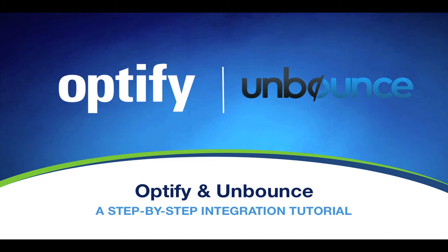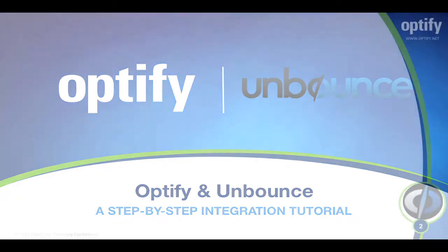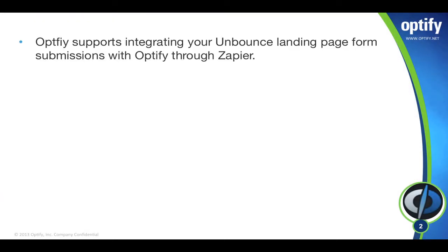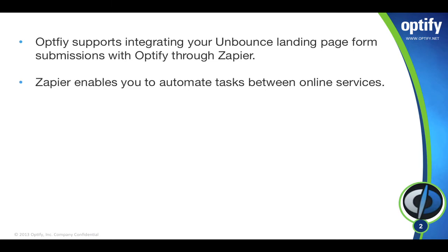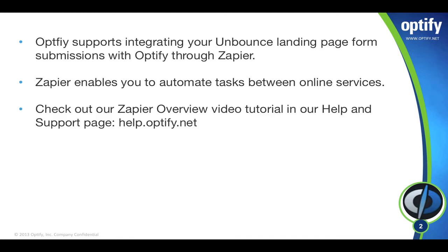This is Ignacio with Optify, and welcome to the Optify and Unbounce integration video tutorial. Optify supports integrating your Unbounce landing page form submissions with Optify through a system called Zapier. Zapier enables you to automate tasks between online services, connecting systems with a simple interface and a step-by-step flow. For more information, you can check out our Zapier overview video tutorial in our Help and Support page at help.optify.net.